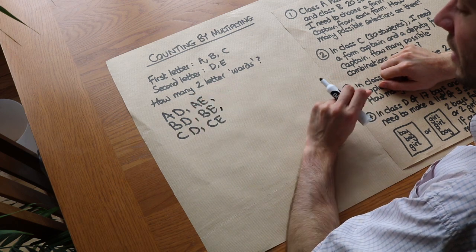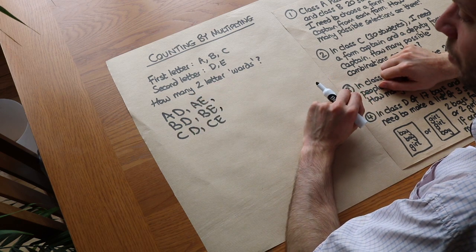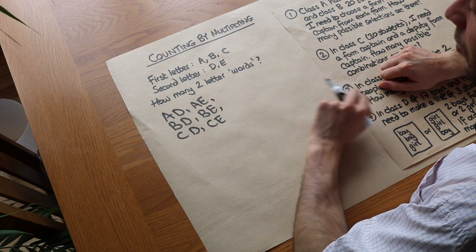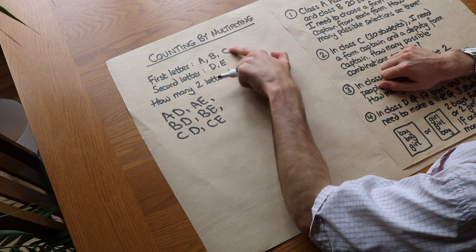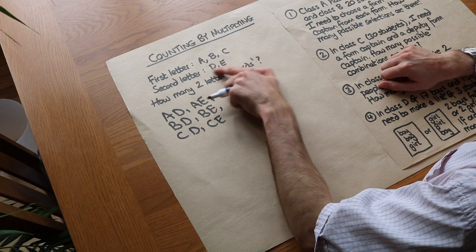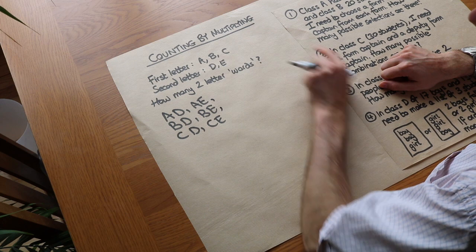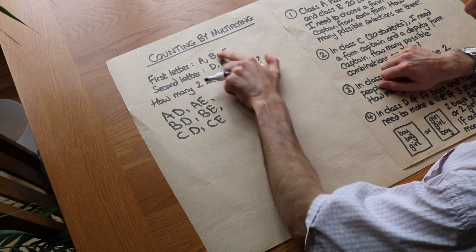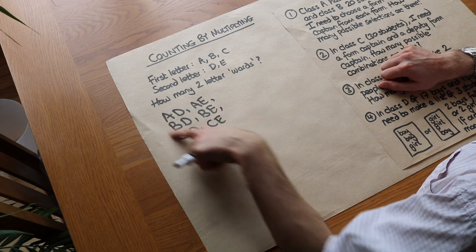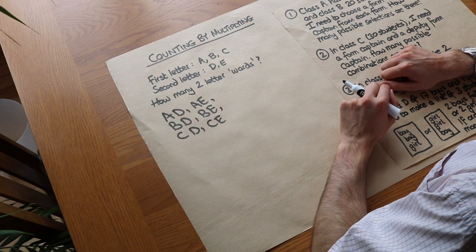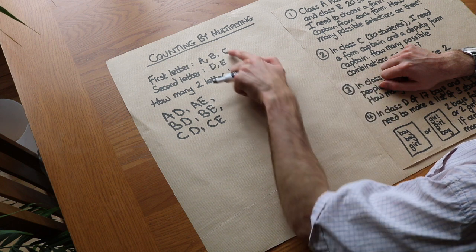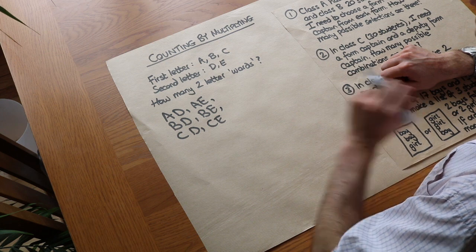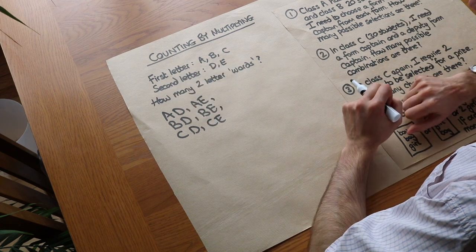How many possibilities did we have in total for the number of two-letter words? We can see there are six possibilities. You might wonder how we get the number of possibilities using the number of choices here and the number of choices here. Well, we had three choices for the first letter and two choices for the second letter, and three times two is six, which is the total number of possible words.